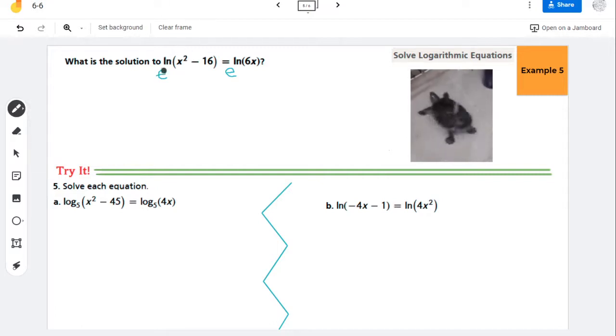So by doing that, the E and the natural log cancel out. And I'm left with x² - 16 = 6x. Now that I've done that, now what I need to do is either factor or use the quadratic formula. And I know this because I have a square term and a linear term. So in order to solve this quadratic, I need to move everything to the same side of the equation. So that 6x has got to go over.